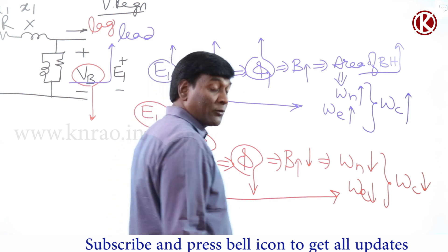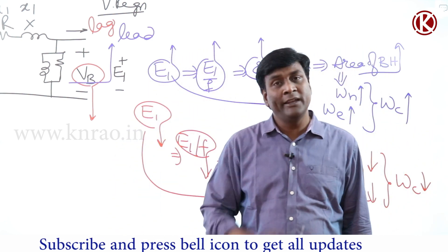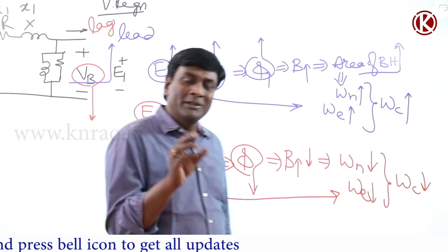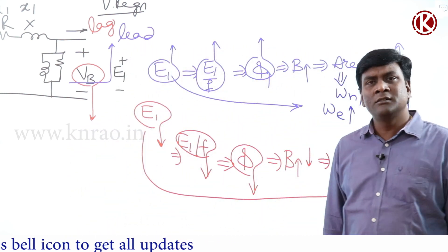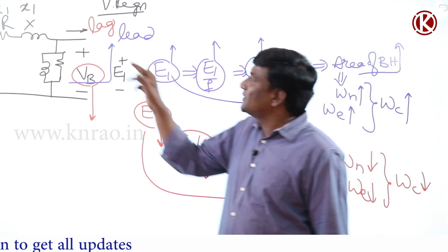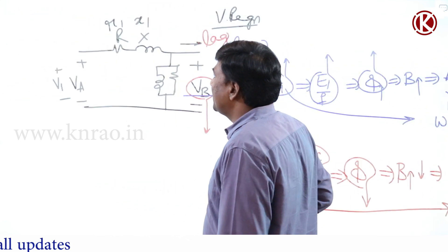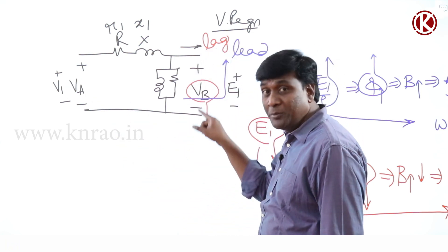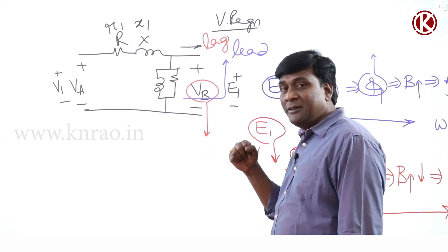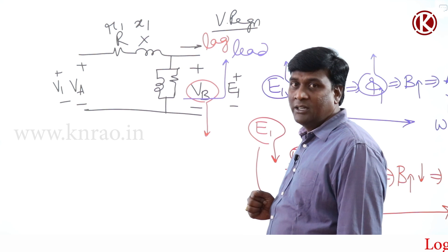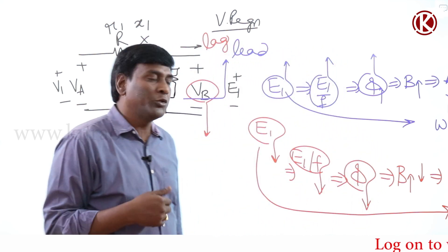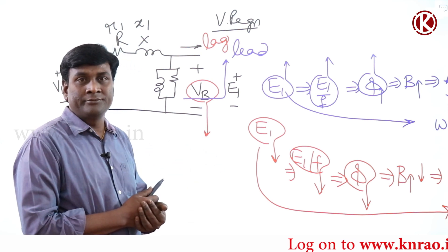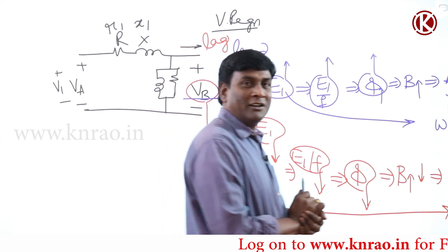At lagging conditions, E1 reduces, E1 by F reduces, operating flux reduces. If Bmax reduces, hysteresis loss — the area of BH — is going to reduce. As E1 reduces, eddy current loss reduces, and total core loss reduces. So at lagging conditions: if V1 is fixed as an infinite source, voltage across the shunt branch reduces, V by F reduces, operating flux reduces, hysteresis loss reduces, and eddy current loss reduces.